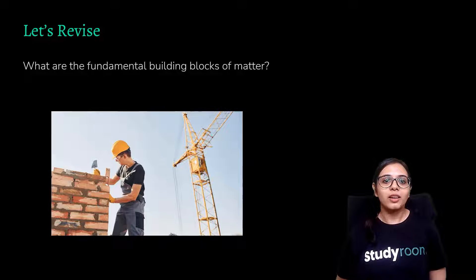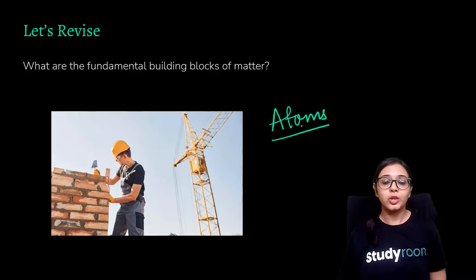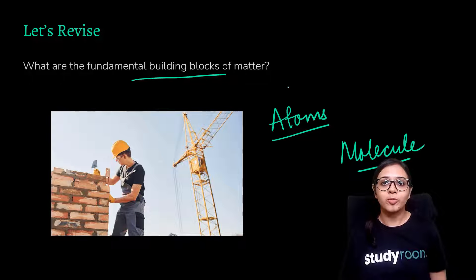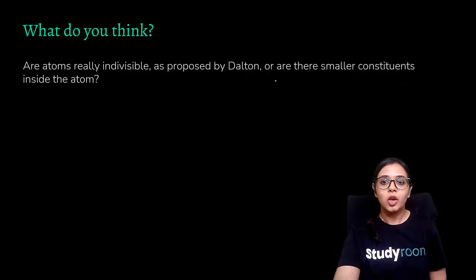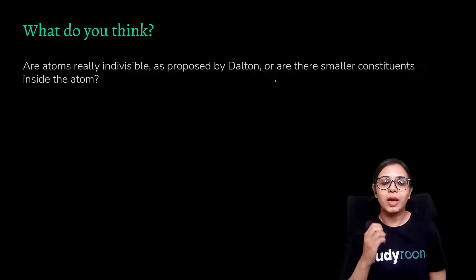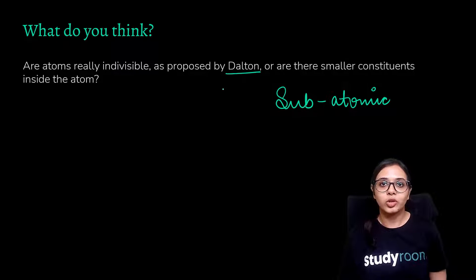Let's revise first: what are the fundamental building blocks of matter? If you remember the previous lesson, we learned that atoms are the fundamental building blocks of matter, and in a compound, molecules are those entities capable of independent existence. Now, are atoms really indivisible as proposed by Dalton, or are there smaller constituents inside the atom? We will be learning what the structure of the atom is, what the subatomic particles are — meaning what are the components of the atom, what is the atom made up of — and where Dalton's postulates went wrong.